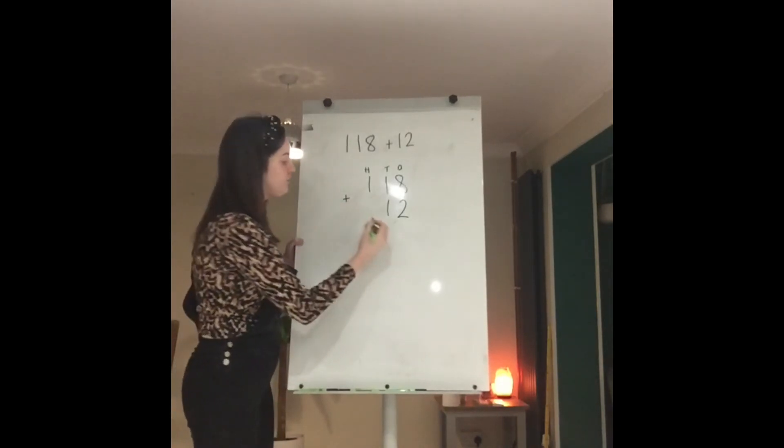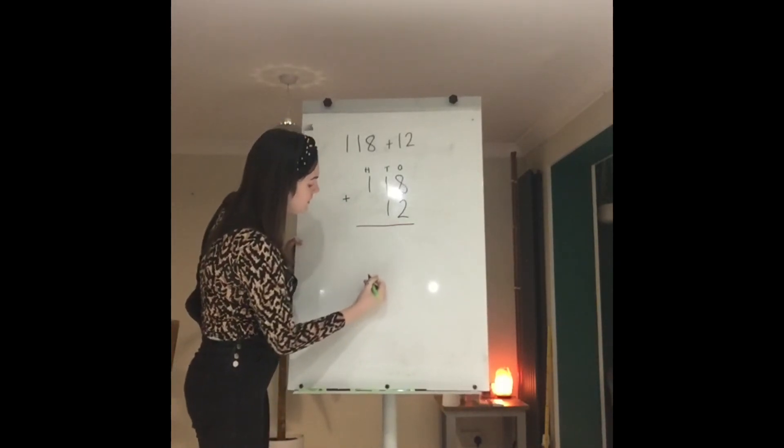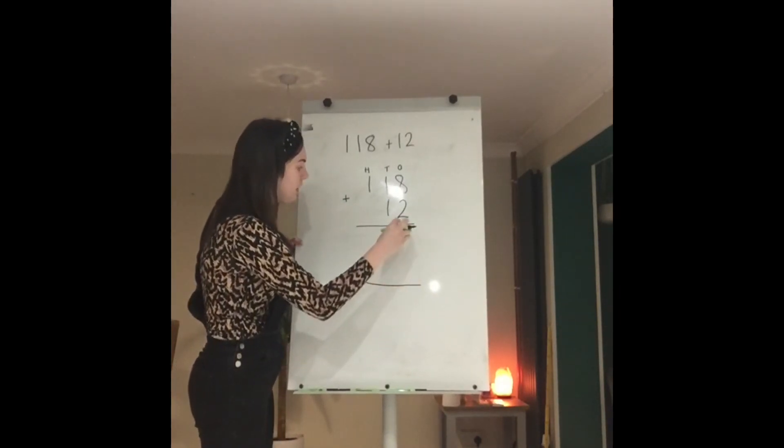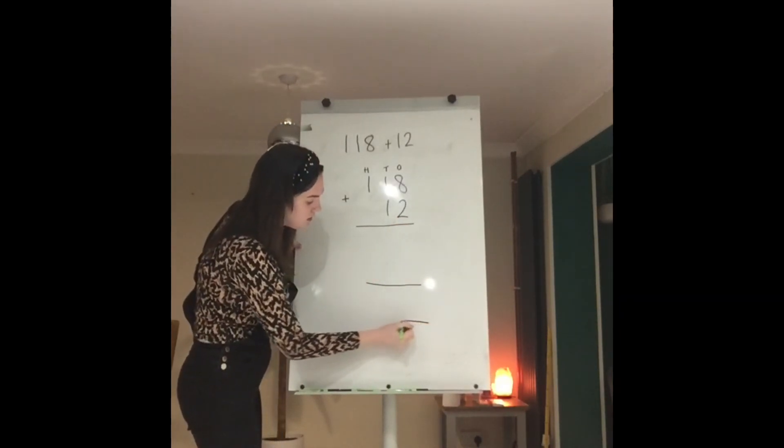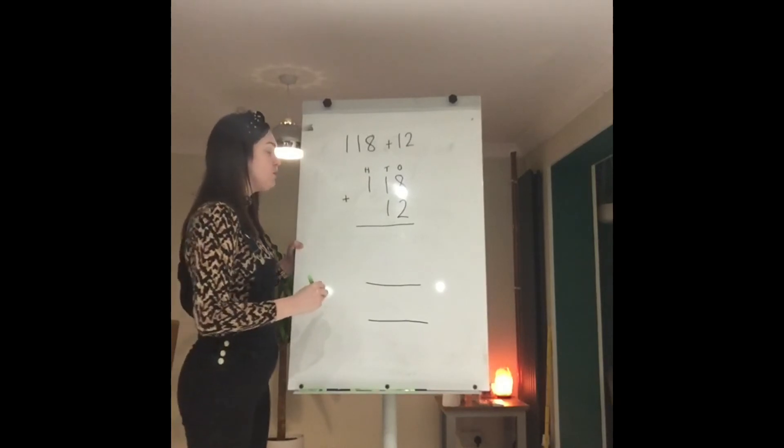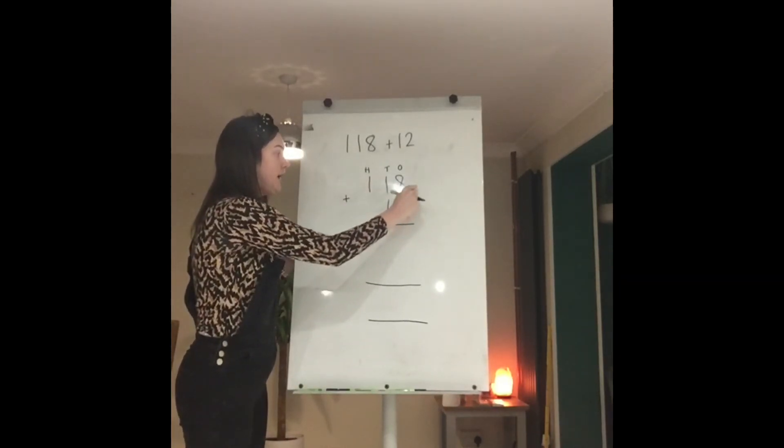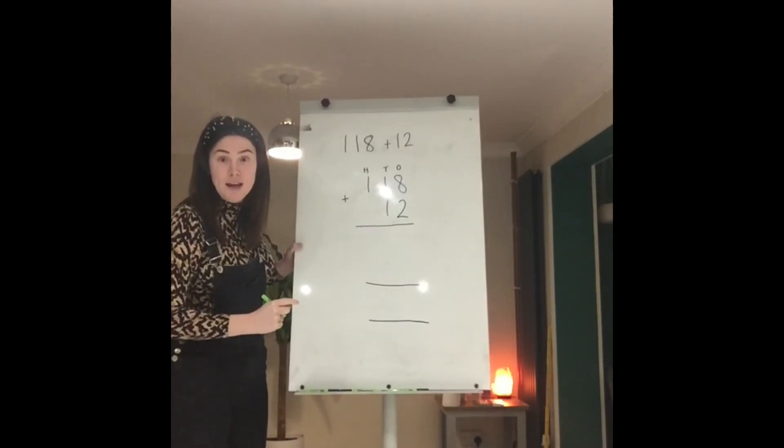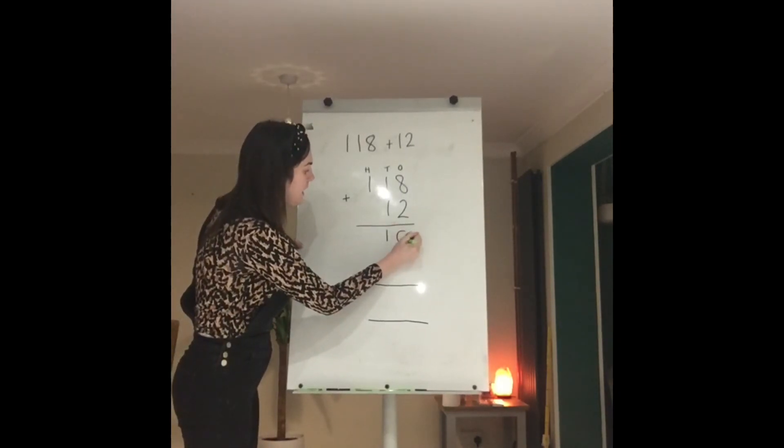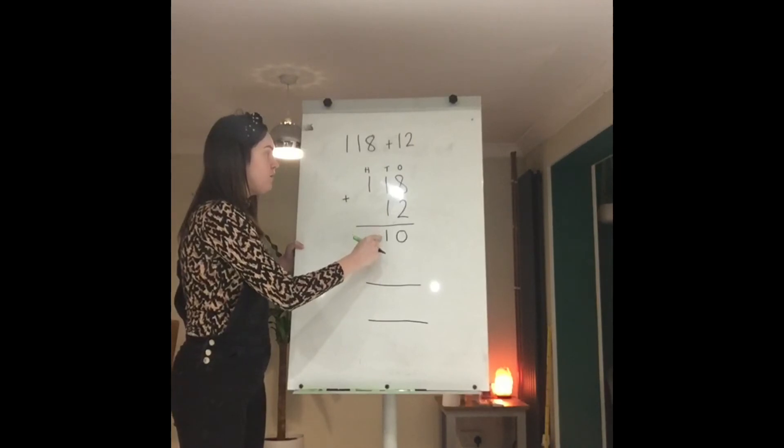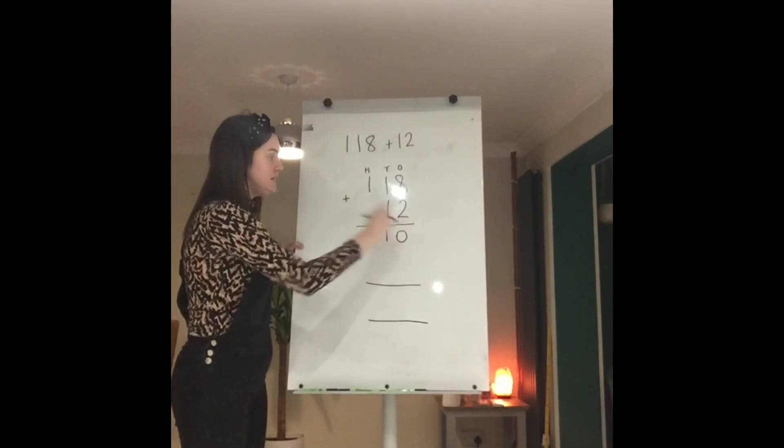I need to leave myself lots of room because I know I'm going to have ones, tens and hundreds here and here is my total. First what we need to do is do 8 plus 2, which we know is 10. Here I'm going to put my 10, my zero is in my ones and my one is in my tens column.